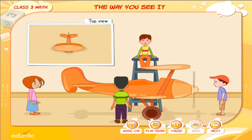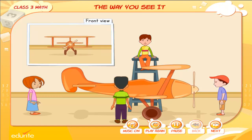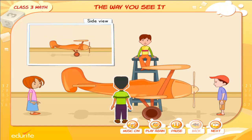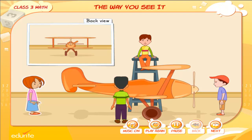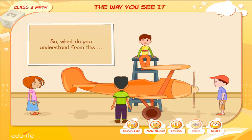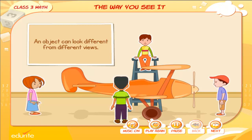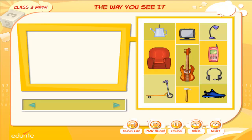Joe is seeing the top view, Rishi the front view, Neil the side view and Ria the back view. So what do you understand from this? An object can look different from different views. Move the mouse over the icons to see their respective views. Click on an object to see different views.